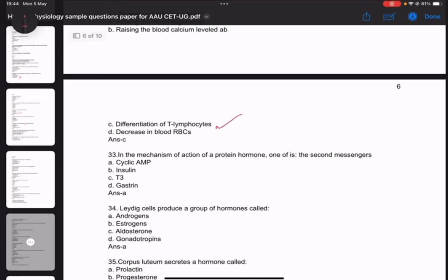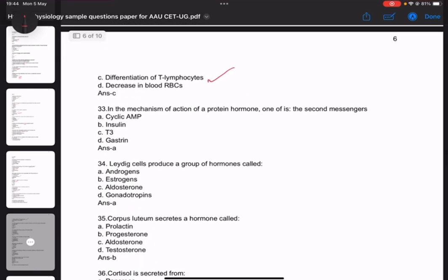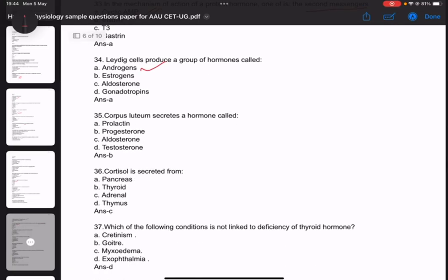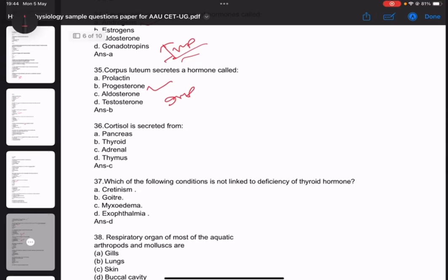Question thirty-two: Thymosin is responsible for differentiation of T-lymphocytes. Question thirty-three: Cyclic AMP acts as a secondary messenger - calcium can also act as a secondary messenger. Question thirty-four: Leydig cells produce a group of hormones called androgens. Question thirty-five: Corpus luteum secretes a hormone called progesterone - this is important. Adrenal cortex secretes cortisol.